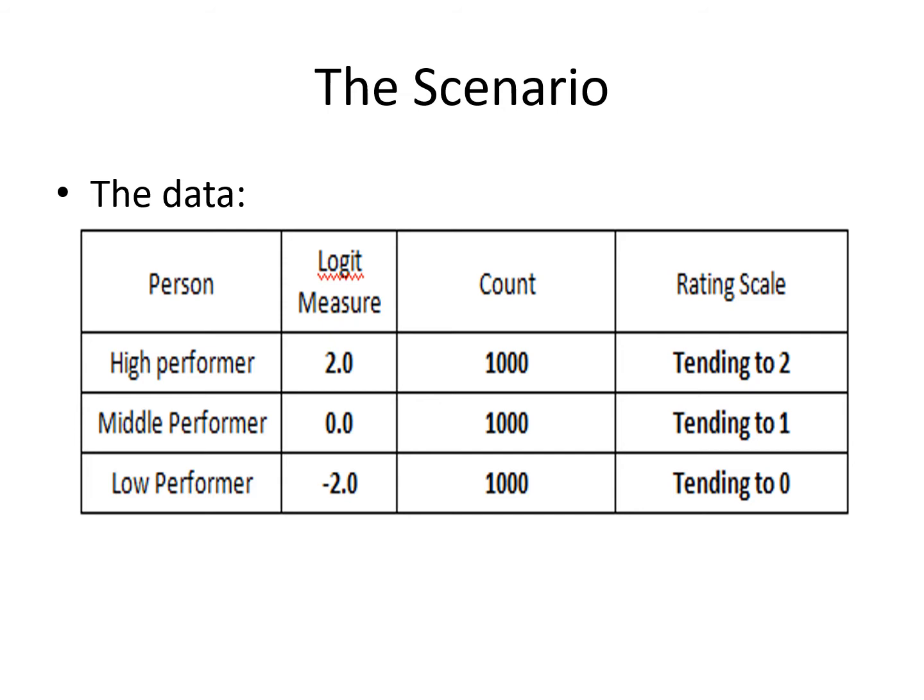Similarly, the middle performers — we expect them to give ratings of 1, but some will give a rating of 2, and some of 0. And the low performers, generally around 0, but some will give a rating of 1 and some a rating of 2. This is why Rasch is so good for that type of probabilistic data, in which we're not quite sure what people are going to do.